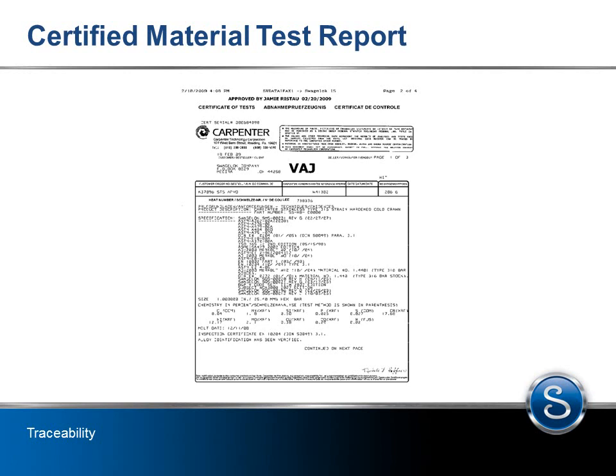A CMTR gives information on producer, melt date, melt method, final product form and finish, corrosion testing results, and non-destructive testing inspection.